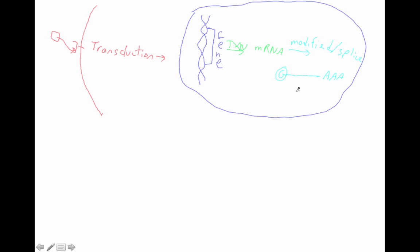The next thing that happens is that this is exported out of the nucleus — nuclear export. Our mature RNA is now in the cytoplasm. We have our G cap with our messenger RNA message and poly-A tail. This will be translated in the cytoplasm — I'm showing this from the eukaryotic perspective — and we end up with a protein.